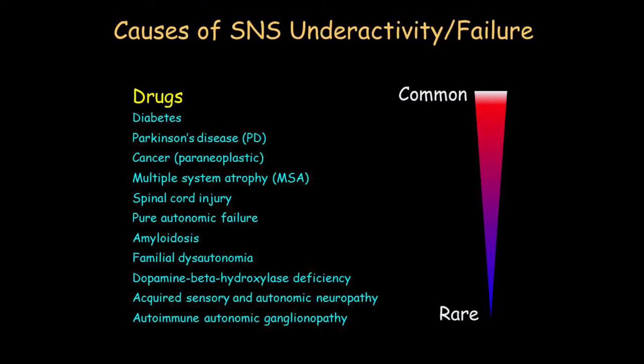What causes underactivity of the sympathetic noradrenergic system? By far the most common cause is drugs. After that, I would think about diabetes in an elderly person, Parkinson's disease — about 90% of patients with Parkinson's have evidence of some autonomic problem, and about 40% have orthostatic hypotension, which can be related to underactivity of the sympathetic noradrenergic system.